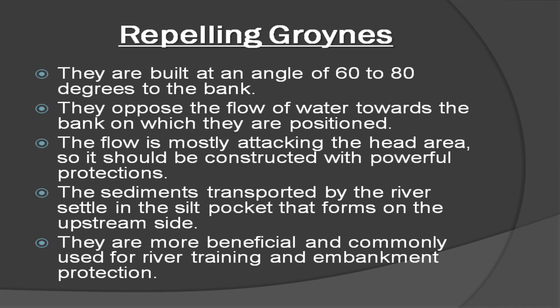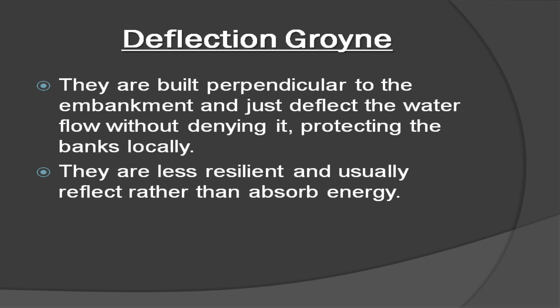Repelling groins are built at an angle of 60 to 80 degrees to the bank and oppose the flow of water toward the bank. The flow mostly attacks the head area, so they should be constructed with strong protections. Sediments transported by the river settle in the silt pocket that forms on the upstream side. They are more beneficial and commonly used for river training and embankment protection.